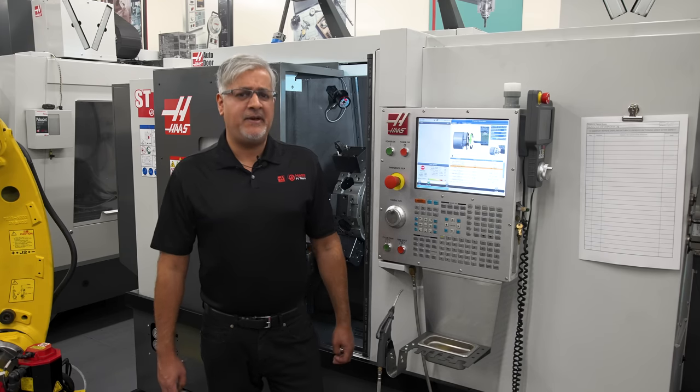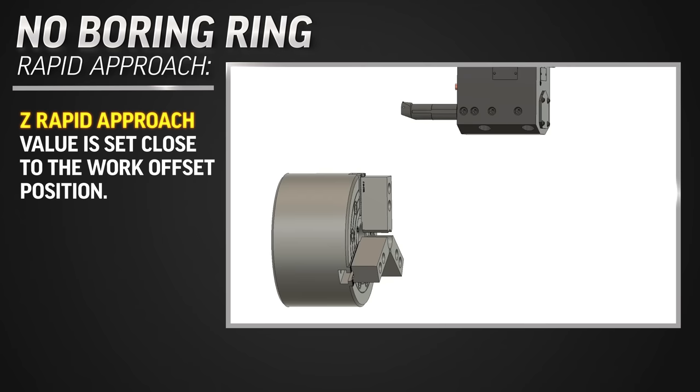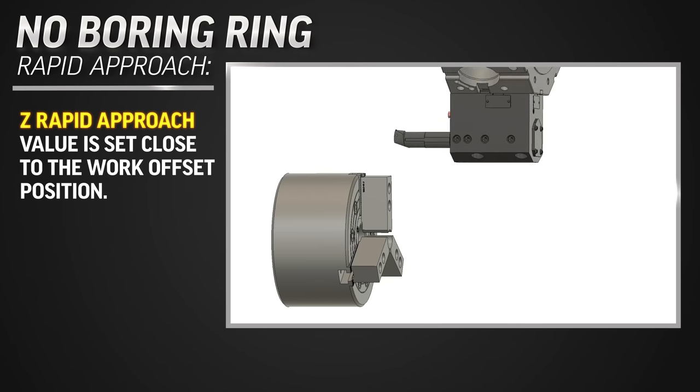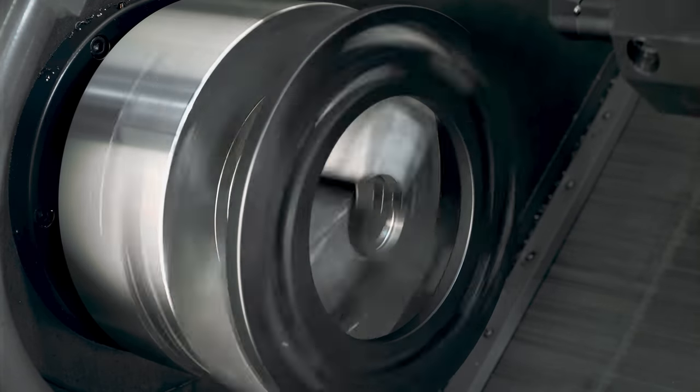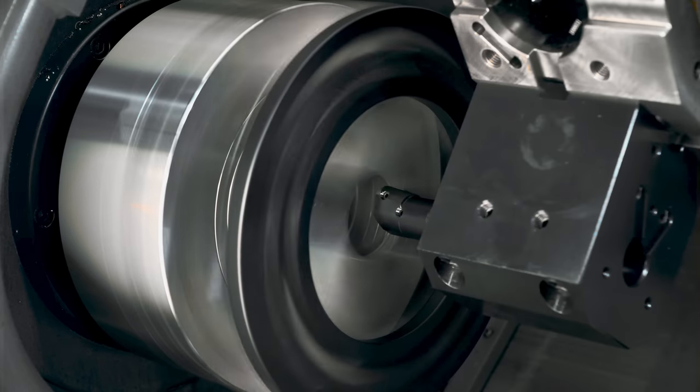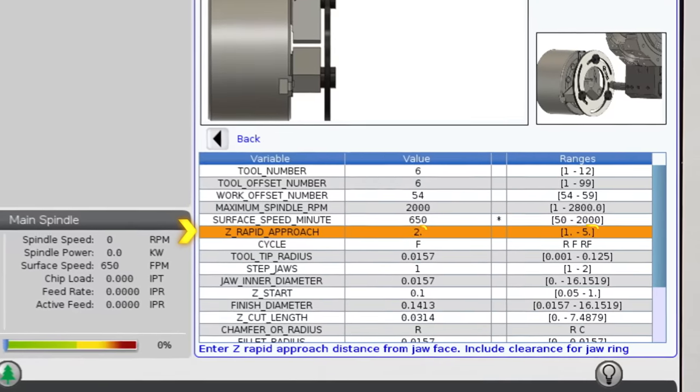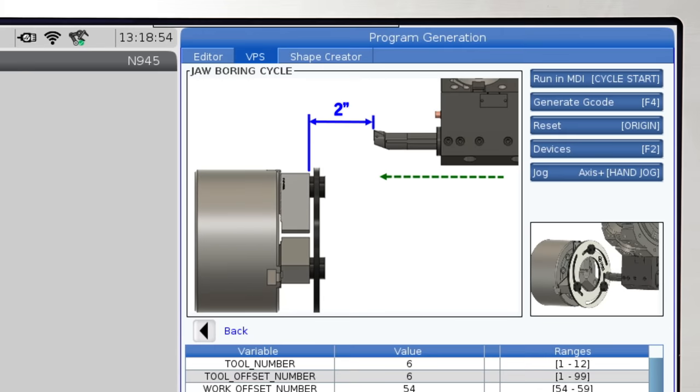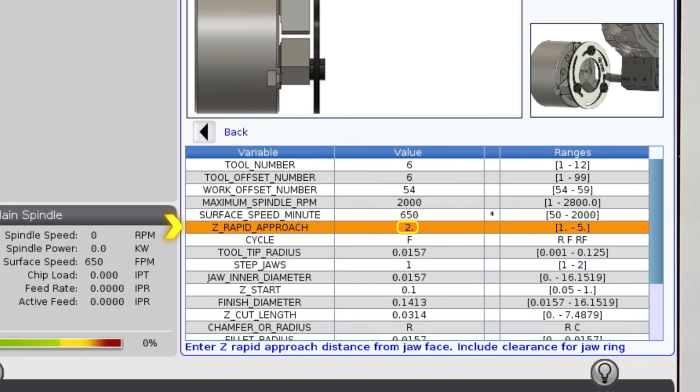Here's something that is a little bit different to our other lathe VPS templates. Typically, the Z-rapid approach value can be set well within a millimeter or a few thousandths of the work offset before the turret rapids down to the start position. However, with jaw boring, there may be some obstacles that prevent this simple Z then X rapid motion. So our default and range values account for obstacles like this jaw boring ring. I'm going to leave this at two inches as this clears the jaw ring.